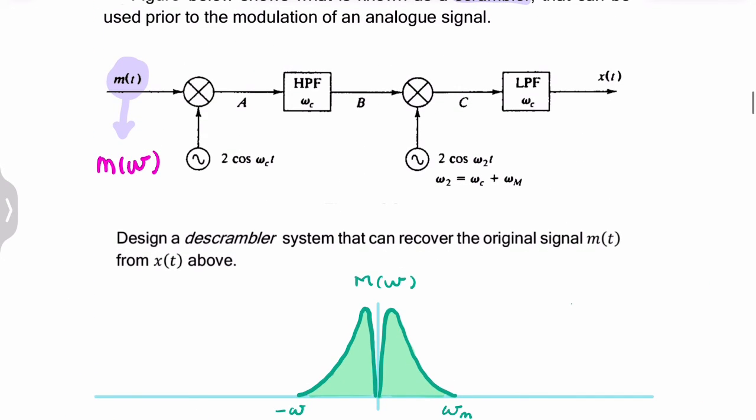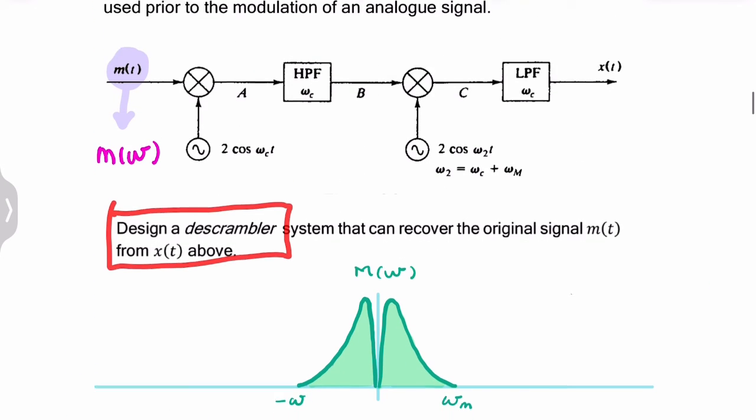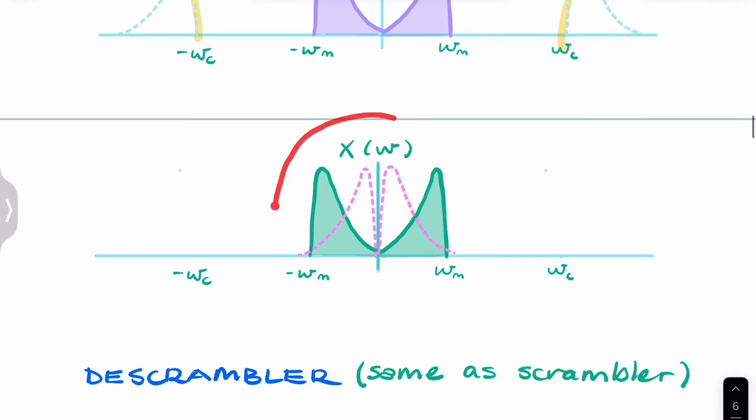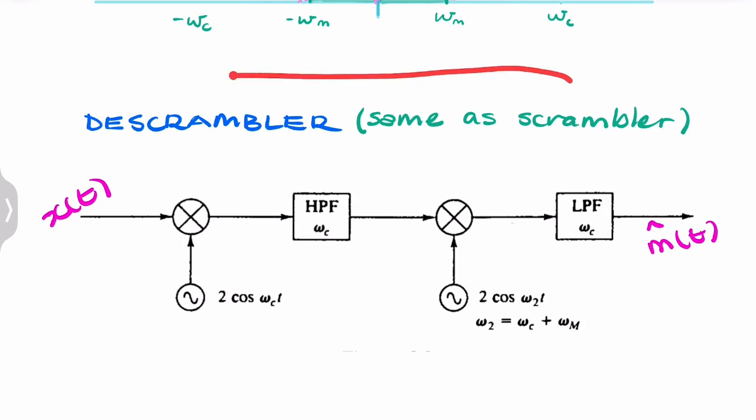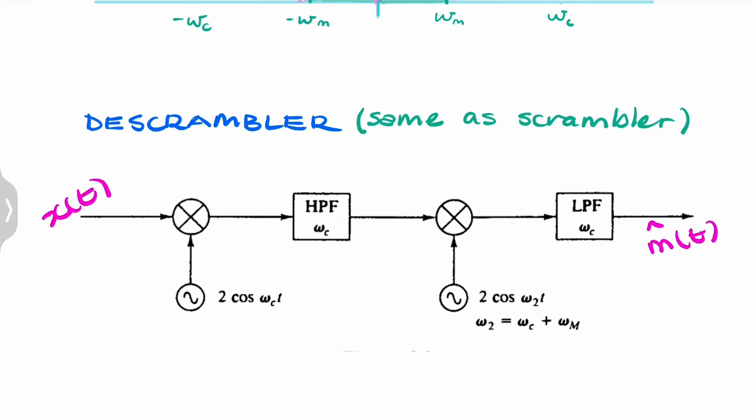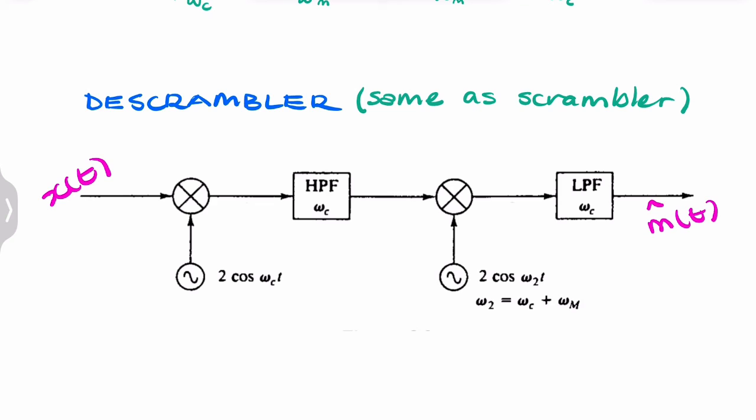So the question asks to design a descrambler. After doing this analysis, after we understand what the scrambler actually does, we can simply present the final answer as the descrambler being the same circuit as the scrambler. I hope you found that helpful. Thank you.